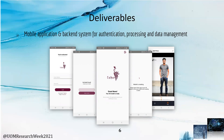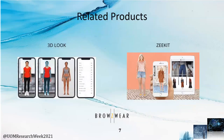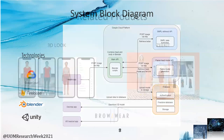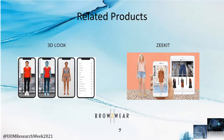While doing a market research, we came up with these products. 3D Look is an API which creates 3D body models using 2D images. Z Kit is a 2D fashion try-on platform which tries on clothes on top of your image. Finally, Browsy Wear is a 3D cloth model design and product.